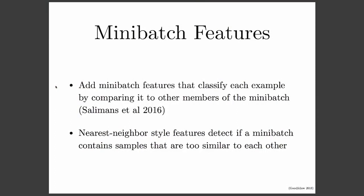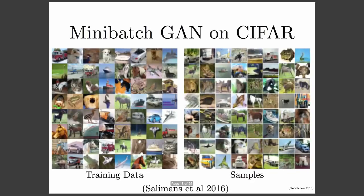One way to mitigate the mode collapse problem is with the use of what we call mini-batch features. Introduced in the paper we presented Monday night from OpenAI, the basic idea is to add extra features to the discriminator so it can look at an entire mini-batch of data. If all the different samples in the mini-batch are very similar, the discriminator can realize that mode collapse is happening and reject those samples as being fake. On the CIFAR-10 dataset, this approach allowed us to learn samples that show all the different object classes for the first time. On the left is what CIFAR-10 training data looks like — 32 by 32 pixel images with very low resolution. On the right, the samples from the model show recognizable horses, ships, airplanes, and cars with the real object classes occurring within the dataset.